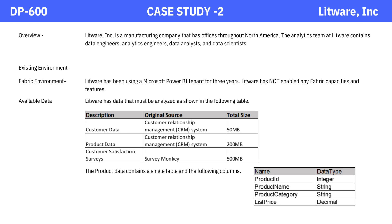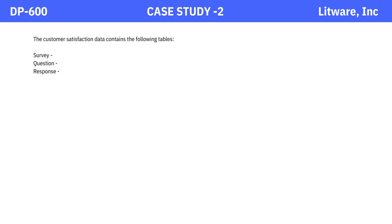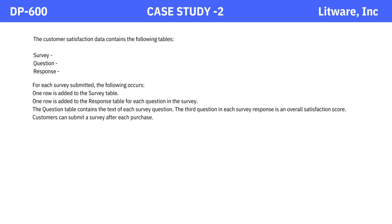In the available data, Litware has data that must be analyzed as shown in the following table, and the product data contains a single table with the following columns. The customer satisfaction data contains the survey, question, and response tables. For each survey submitted, one row is added to the survey table, and one row is added to the response table for each question in the survey. The question table contains the text of each survey question. The third question in each survey response is an overall satisfaction score. Customers can submit a survey after each purchase.